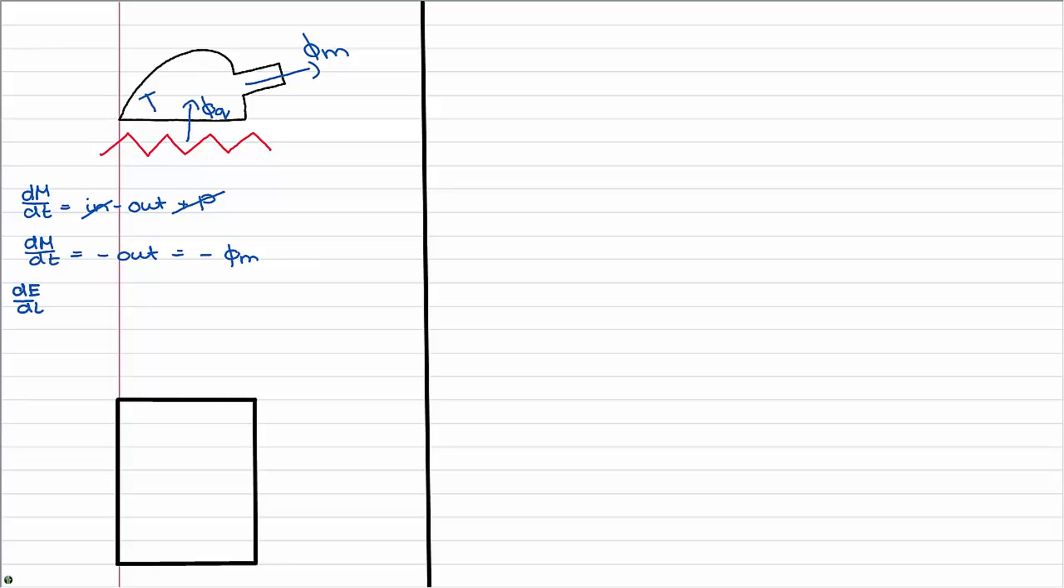So dE/dt is also in minus out plus production, which this time is way longer. And I skipped the in part since it is the same as the out part only without the minus. But we have -Vm times the internal energy plus the energy from pressure plus the energy from kinetic energy plus the potential energy.